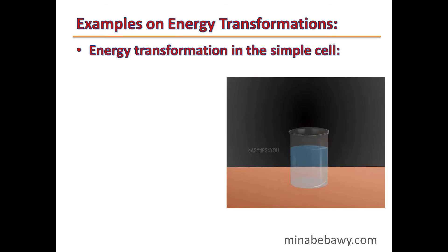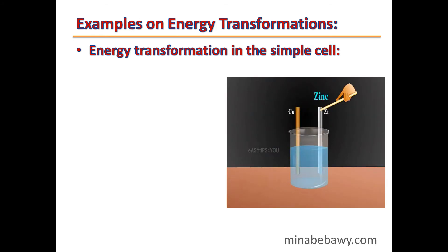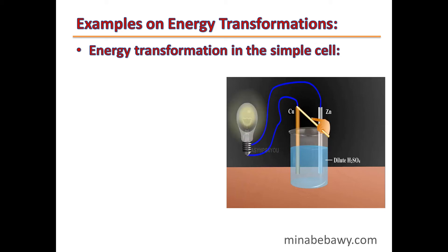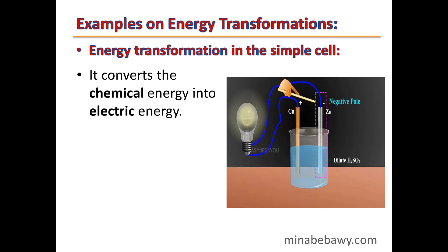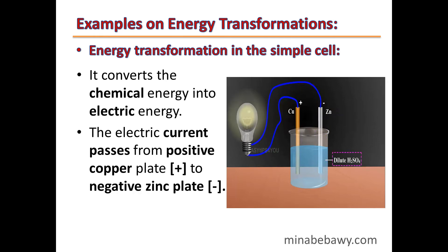Energy transformations in the assembled cell. The assembled cell consists of two rods: one made of copper and the other made of zinc, placed inside sulfuric acid in a glass container. If we connect the two rods, the lamp will light up. The electric current moves from the positive copper rod to the negative zinc rod. The assembled cell converts chemical energy into electric energy.